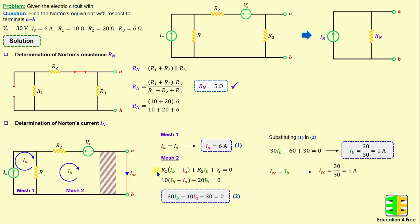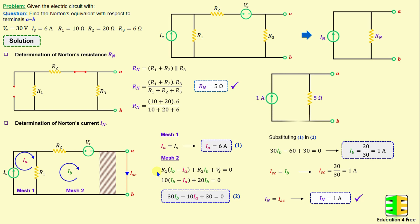The Norton's equivalent with respect to terminals A and B is a 1 amp current source IN in parallel with a 5 ohm resistor RN.